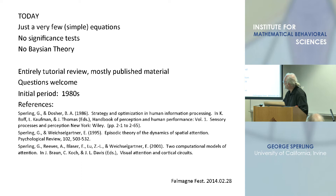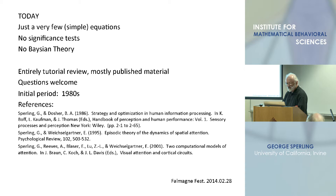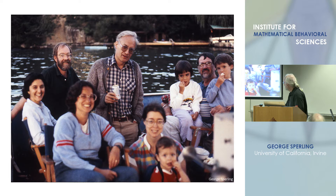Today just a few very simple equations, no significance tests, no Bayesian theory entirely. So what happened during this period? Here's a picture from that period, and you can recognize our central figure. This is our dean, and this is Dick Hopenold — he also became a dean and head of a whole school. And this is my 31-year-old son at an earliest stage.